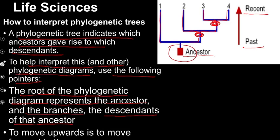When we move upwards in the phylogenetic tree, it basically means we are moving forward in time — moving towards the more recent times, towards the present.